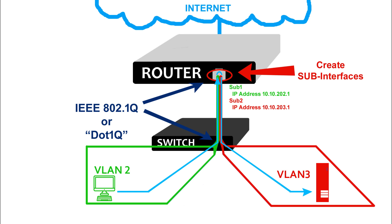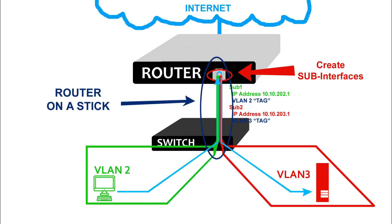On the router, we have to configure .1Q VLAN tags on each of those sub-interfaces to tell the router which VLAN the traffic coming from the switch is from, and add tags to the outbound traffic from each sub-interface to designate which VLAN that traffic is going to. This whole scenario and configuration is called router on a stick because you're basically using a single interface on the router corresponding to a single interface on the switch, and all inter-VLAN traffic travels up and down this single Ethernet cable connection. This allows you to use the router to route between VLANs while minimizing the number of connections needed between the router and the switch.